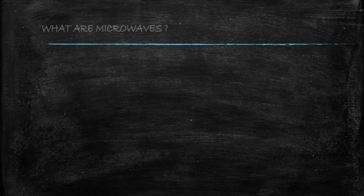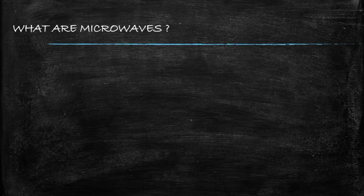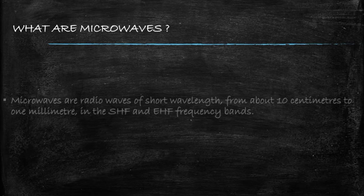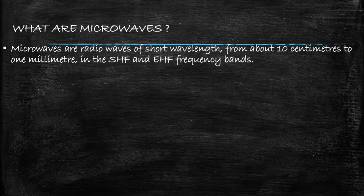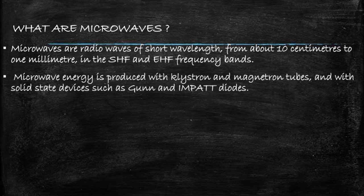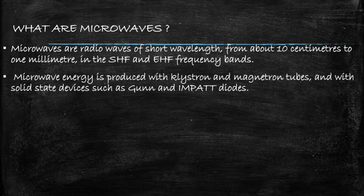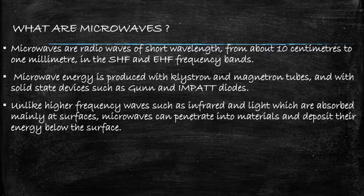What strikes your mind when you hear the word microwave? Is it oven? Are you interested to know what's going on inside an oven? Let's see about microwaves. Microwave energy is produced with klystron and magnetron tubes, and with solid-state devices such as Gunn and IMPATT diodes. Unlike high frequency waves such as infrared and light which are absorbed mainly at surfaces, microwaves can penetrate into materials and deposit their energy below the surface.